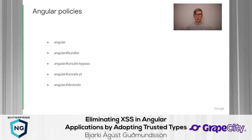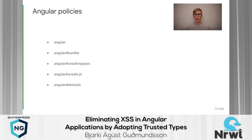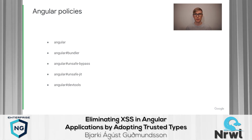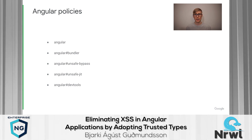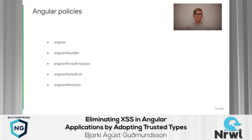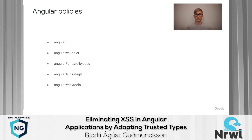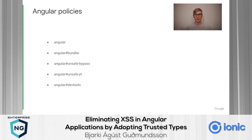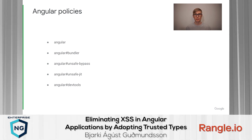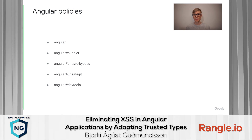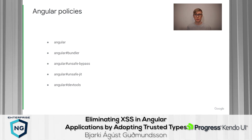Angular itself may create a number of trusted types policies, which you can either allow or block using the trusted types directive. The Angular and Angular Bundler policies are required for basic Angular functionality and are always safe to allow. The Angular Unsafe Bypass policy is created when any of the bypass security trust functions are called — depending on whether you allow this policy, you can control whether calls to bypass security trust are permitted in your application. Angular Unsafe JIT is required if you need to use Angular's just-in-time compilation, but using ahead-of-time compilation is strongly encouraged, not only for security but also for performance reasons. Finally, if you want to use the Angular DevTools while developing, you need to allow the Angular DevTools policy — but make sure you only do this locally.